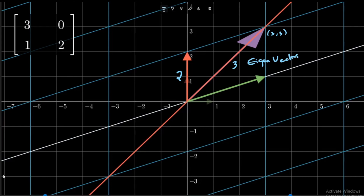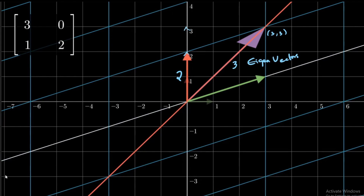Note that any vector which is a scaled-up version of an existing eigenvector is also an eigenvector. For example, if [0,1] is an eigenvector, then [0,2] is also an eigenvector, [0,3] is also an eigenvector, and so on.